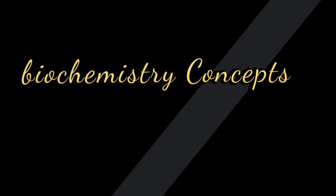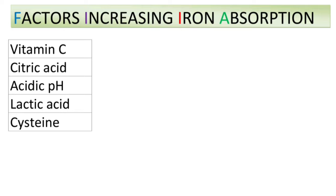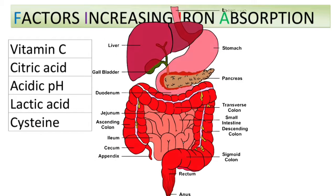Hello everyone, welcome to my channel Biochemistry Concepts. Iron is mainly absorbed from the upper part of the duodenum.